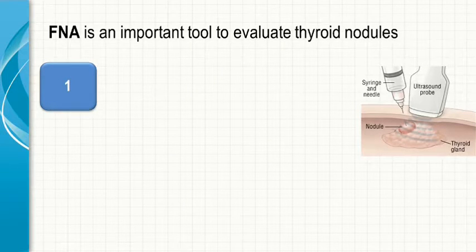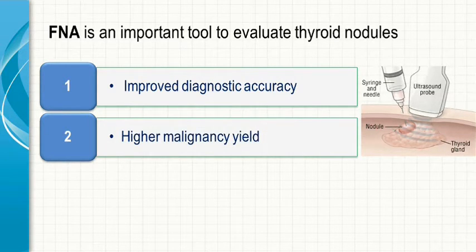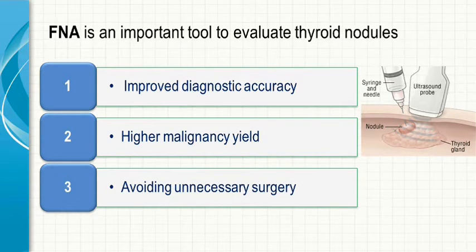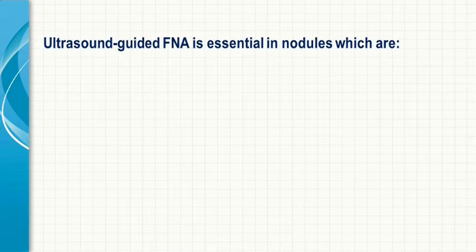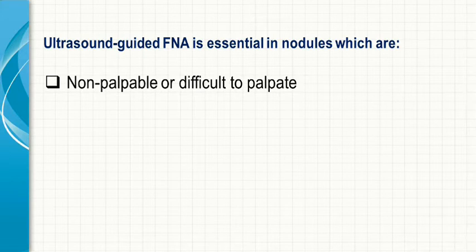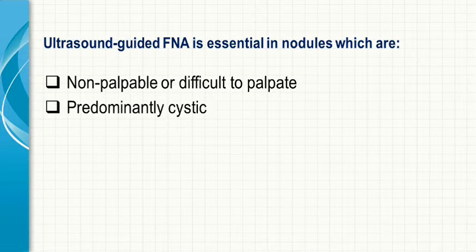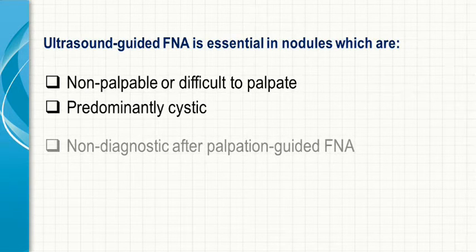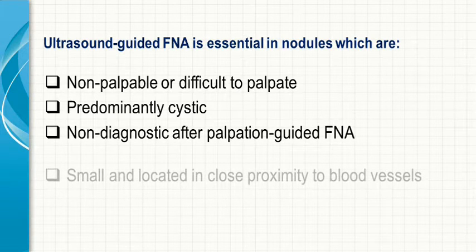Fine needle aspiration is an important tool to evaluate thyroid nodules. It improves diagnostic accuracy, has a higher malignancy yield, and is the procedure by which unnecessary surgery can be avoided. Ultrasound-guided FNA is essential in nodules which are non-palpable or difficult to palpate, predominantly cystic, non-diagnostic after palpation-guided FNA, small, and located in close proximity to blood vessels.